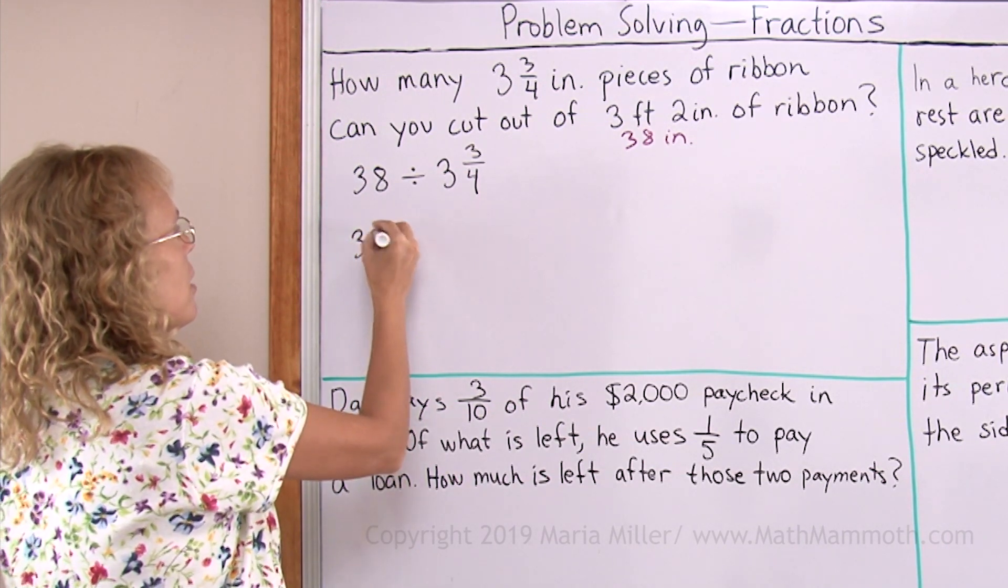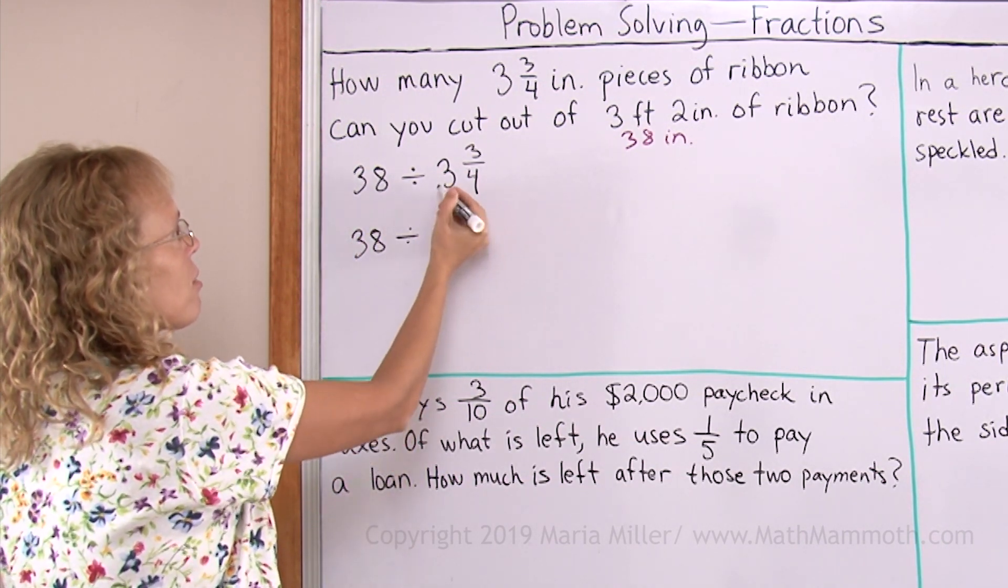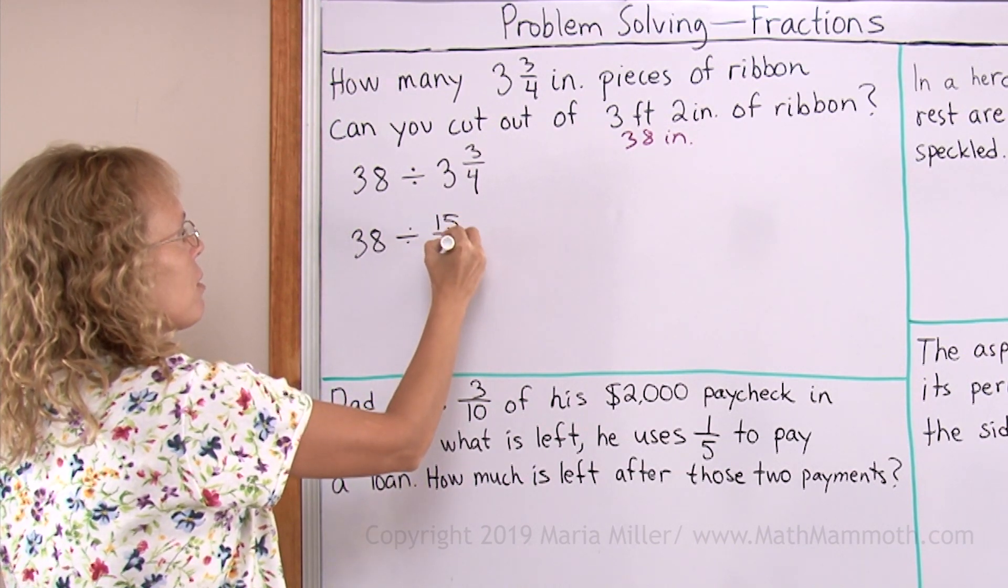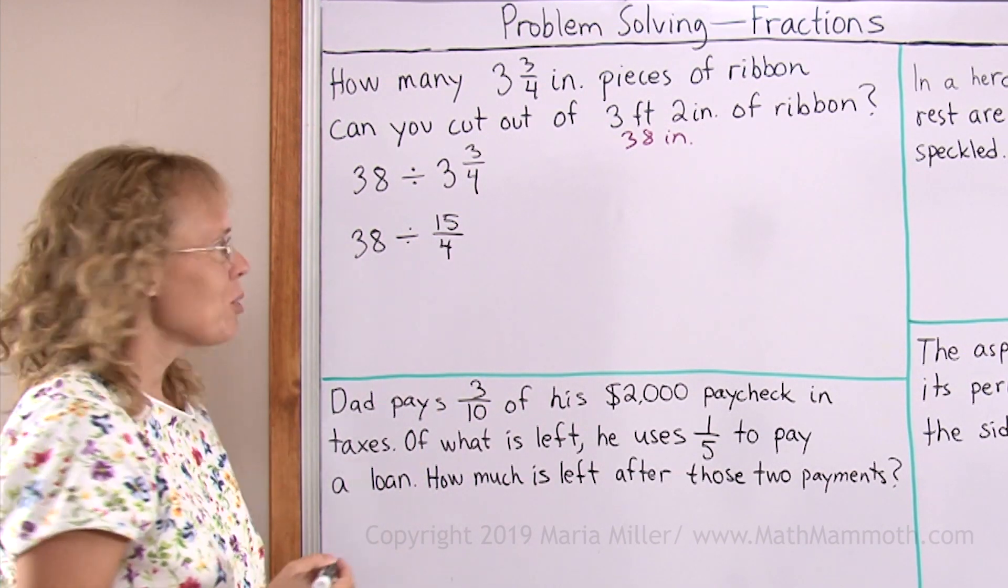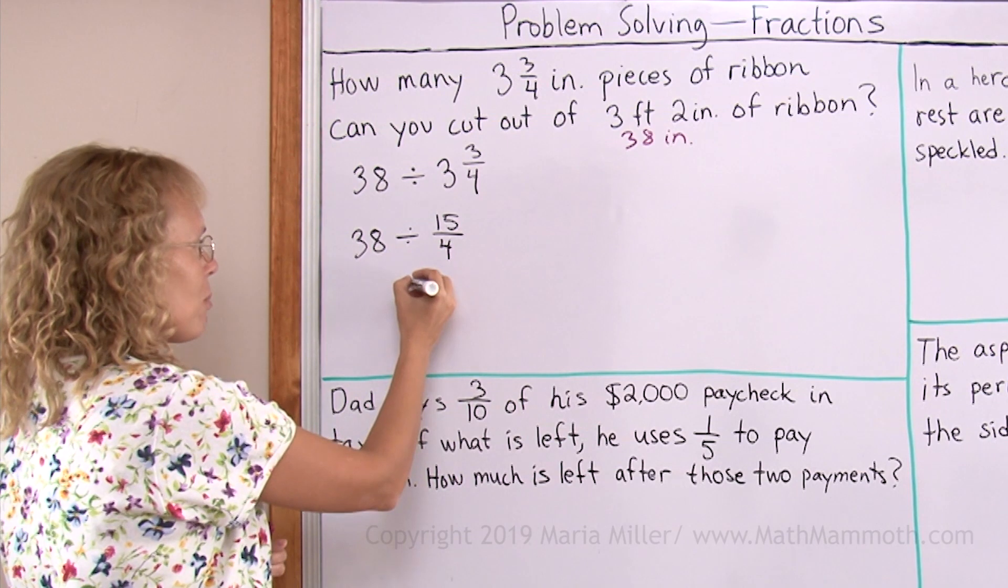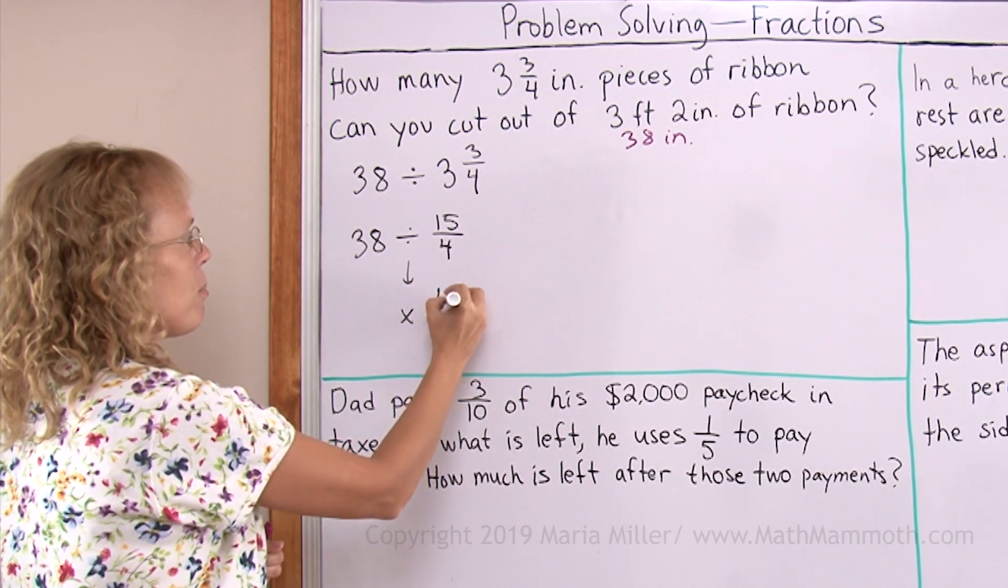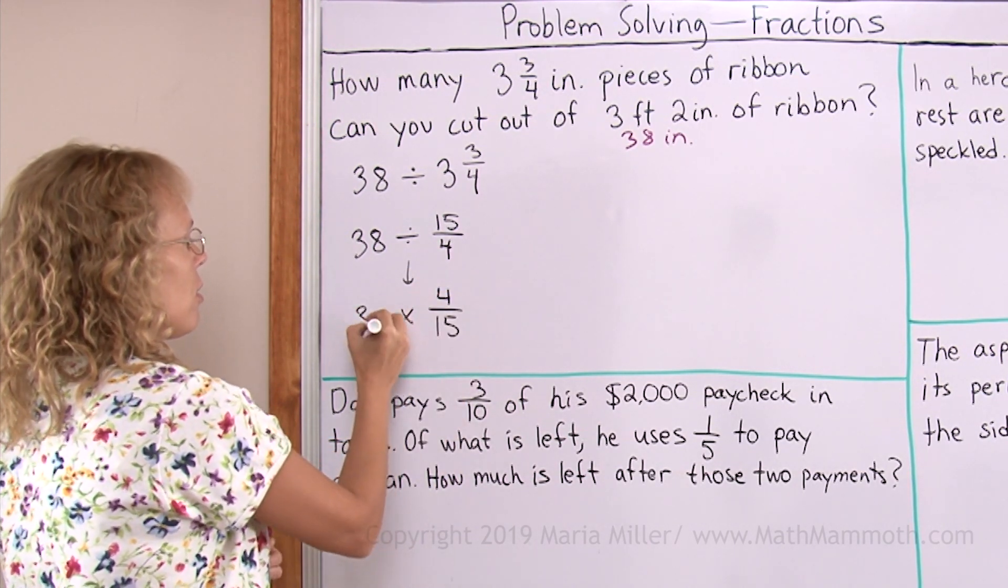So 38 divided by 3 times 4 is 12, that's 15, over 4. And now we'll change the division into multiplication using the shortcut and then flipping this and 38.